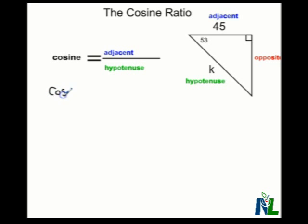The cosine of 53 degrees is equal to the adjacent side, which is 45, over the hypotenuse, our unknown variable K.